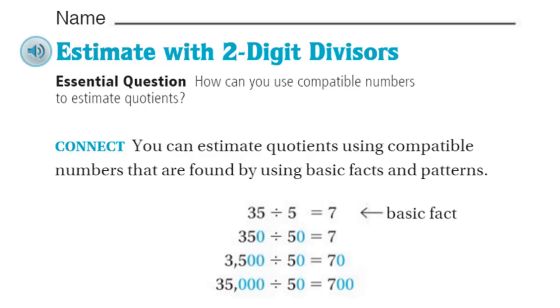You can estimate quotients using compatible numbers that are found by using basic facts and patterns. Very nice. We have a basic fact right here. It says 35 divided by 5 equals 7. Everybody knows that, we hope most of us do by fifth grade. But then it looks like they're adding on a zero. They're making their numbers 350 divided by 50, which still happens to equal 7. Interesting pattern. So even though we made 35 ten times greater, making it 350, and 5 we made ten times greater to 50, it still ends up with the same quotient.